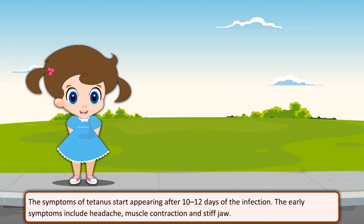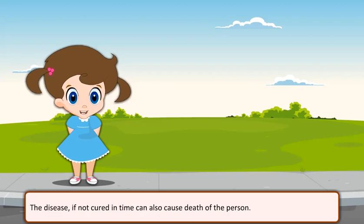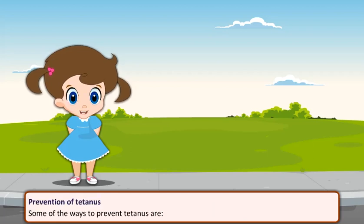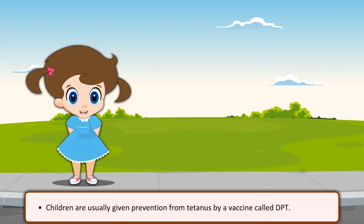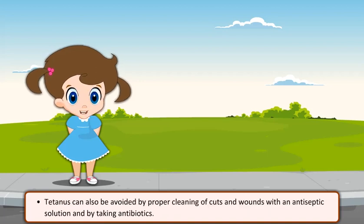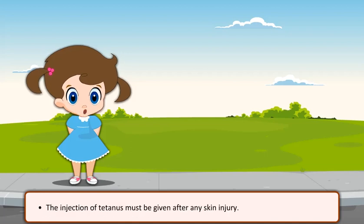The symptoms of tetanus start appearing after 10-12 days of the infection. The early symptoms include headache, muscle contraction, and stiff jaw. The disease, if not cured in time, can also cause death. Children are usually given prevention from tetanus by a vaccine called DPT. Tetanus can also be avoided by proper cleaning of cuts and wounds with an antiseptic solution and by taking antibiotics. The injection of tetanus must be given after any skin injury.